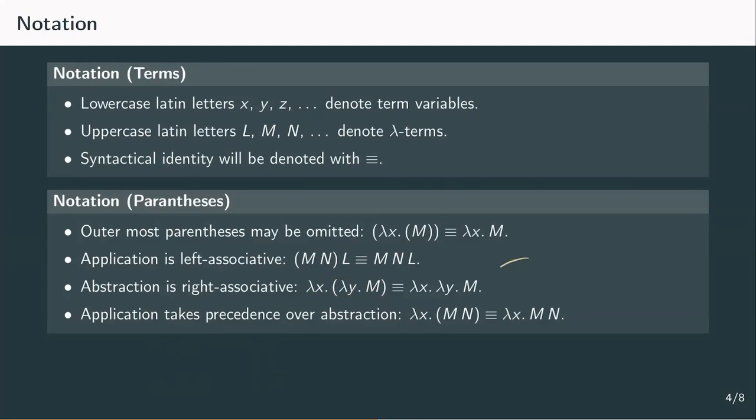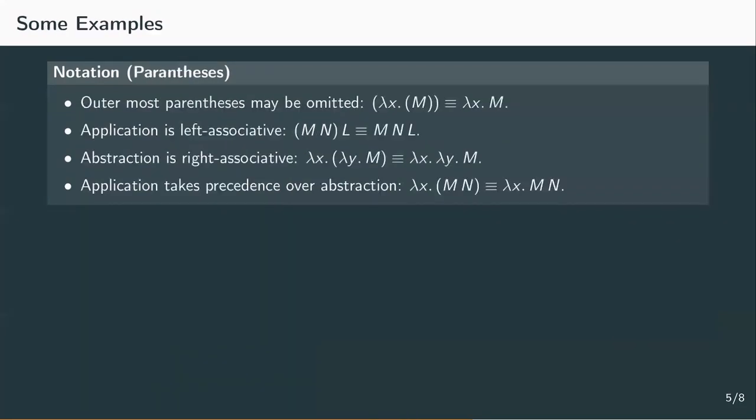In an application, we associate the terms by default from the left, and so we can leave out the corresponding parentheses. So, M apply to N in brackets, apply to L, means the same as just M apply to N apply to L. In abstraction, on the other hand, we associate from the right. So, lambda x dot, opening bracket, lambda y dot M, closing bracket, is equivalent to lambda x dot lambda y dot M. If this seems confusing at first, just remember how we would read the notion f of x, y. We read the inputs from left to right, first x, then y. This corresponds to the right association of abstraction. First, we read lambda x dot, and then lambda y dot. The last convention combines the two notions and says which has precedence. Application binds stronger than abstraction, so we can omit the parentheses after the dot.